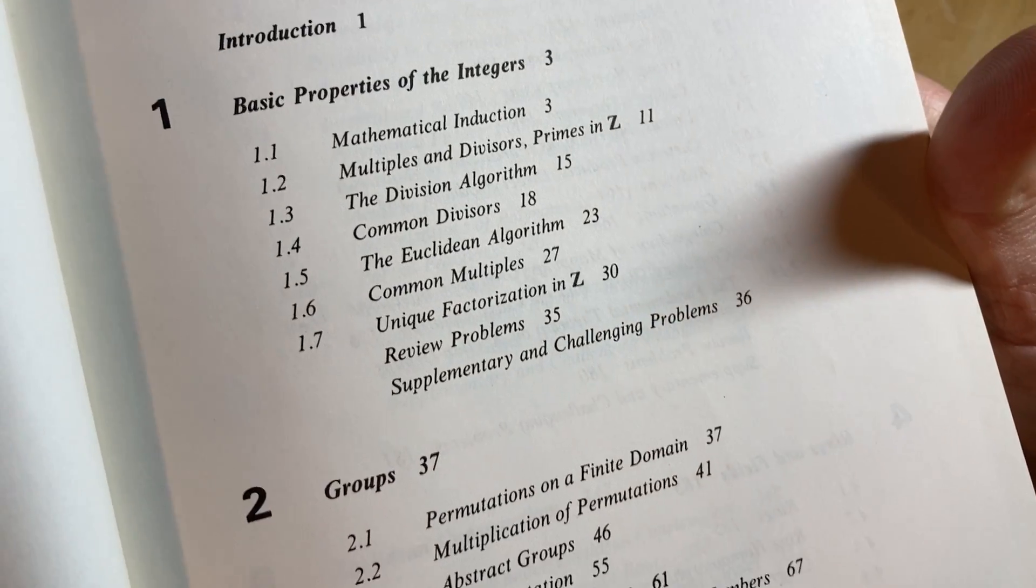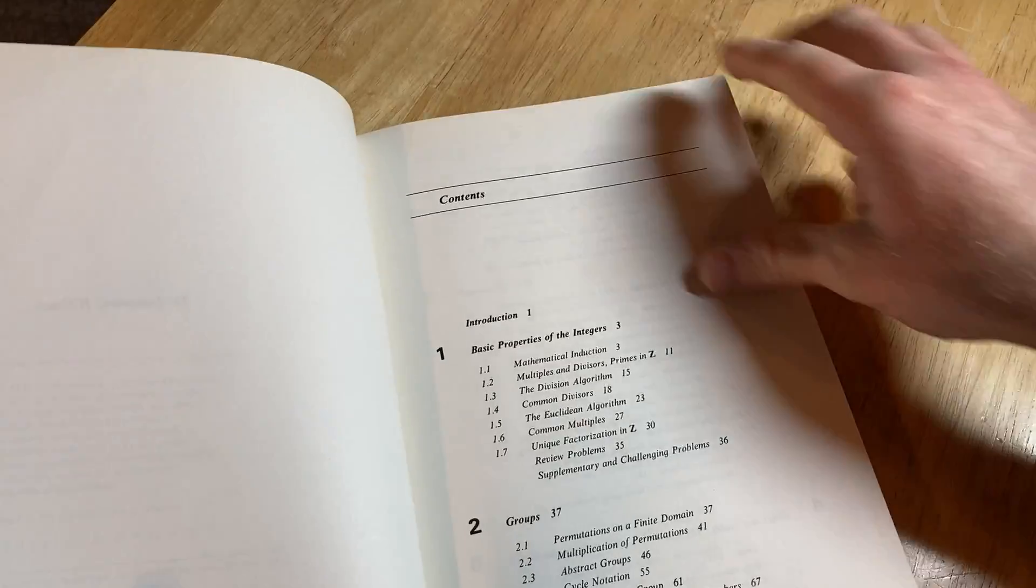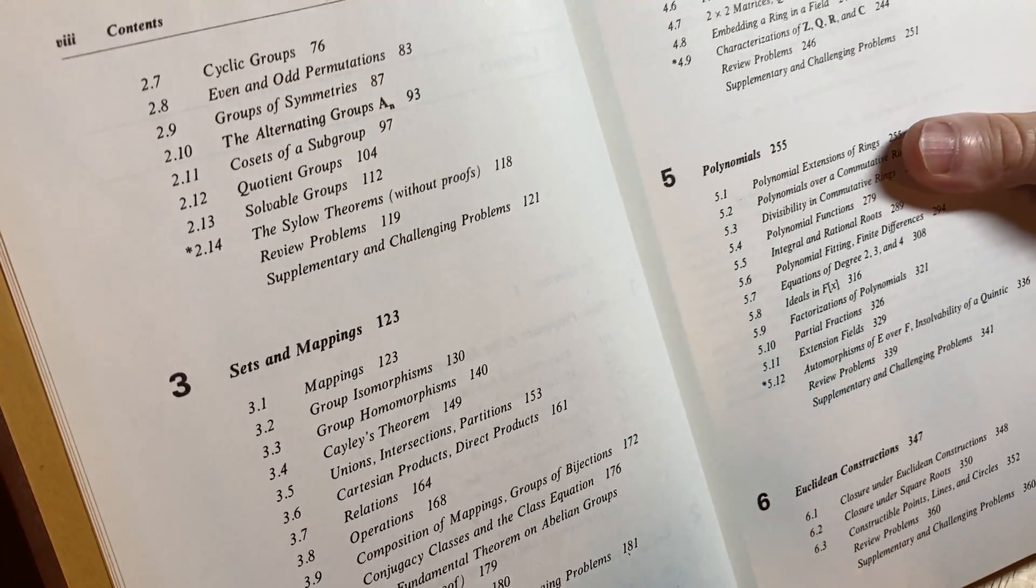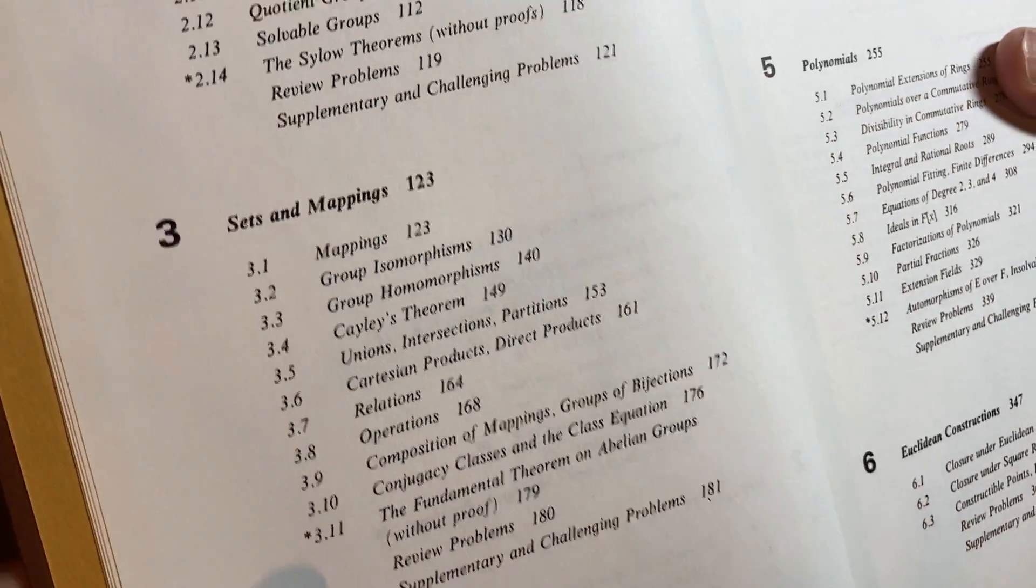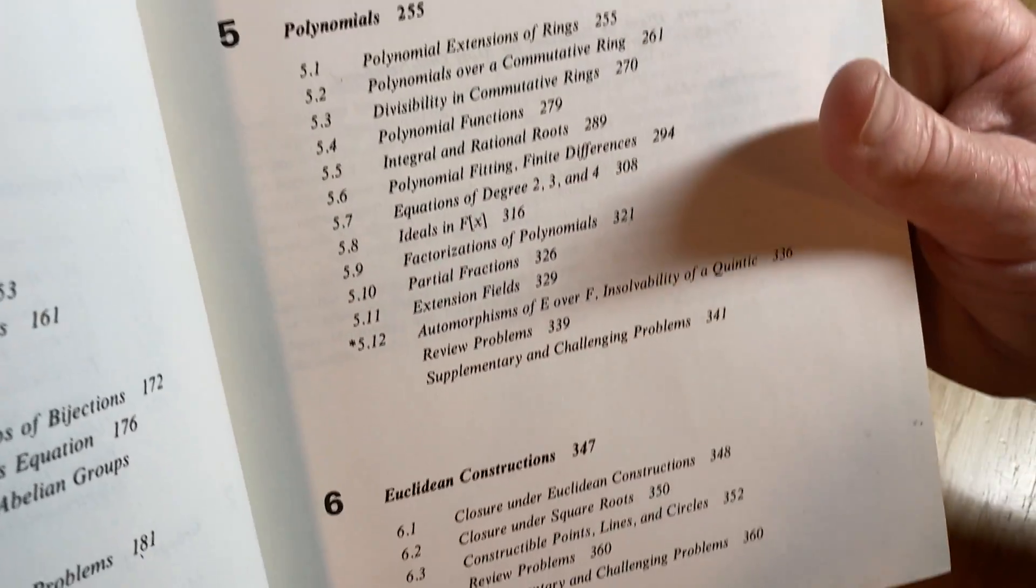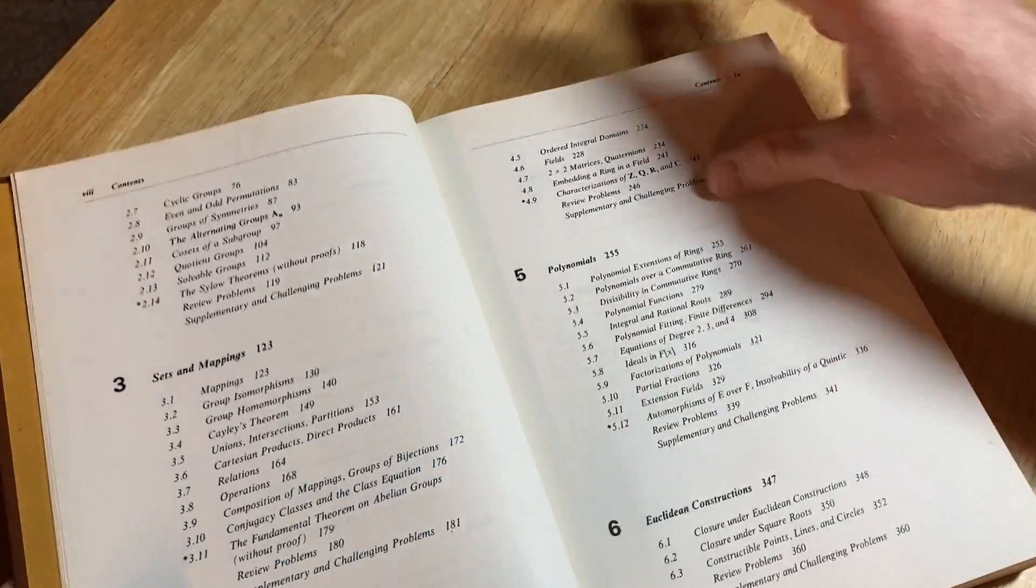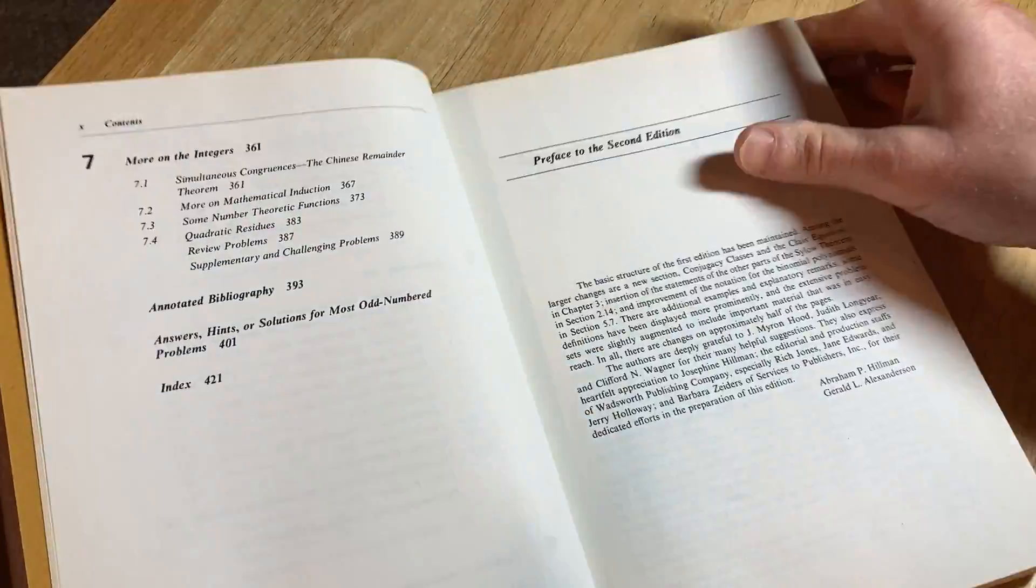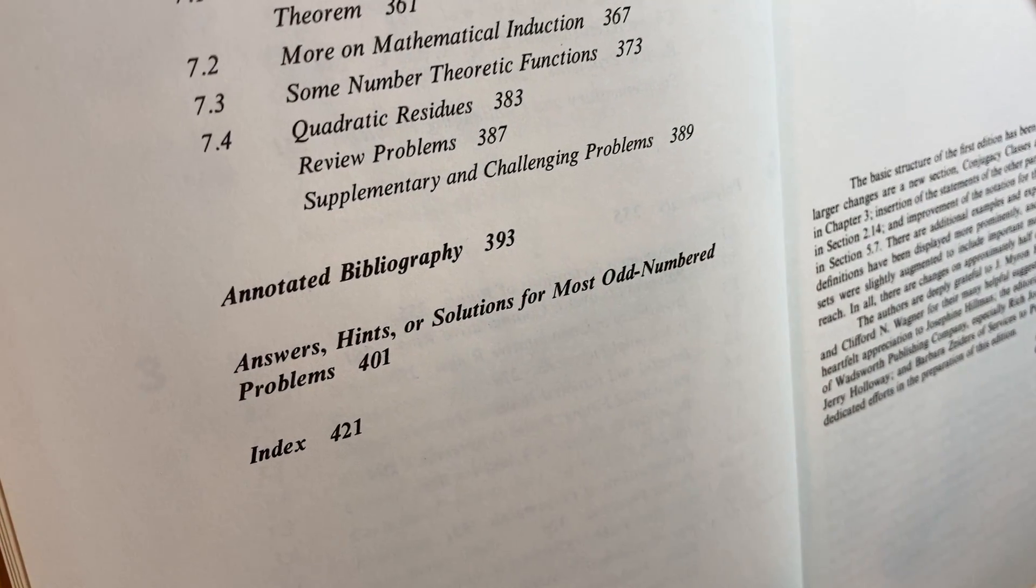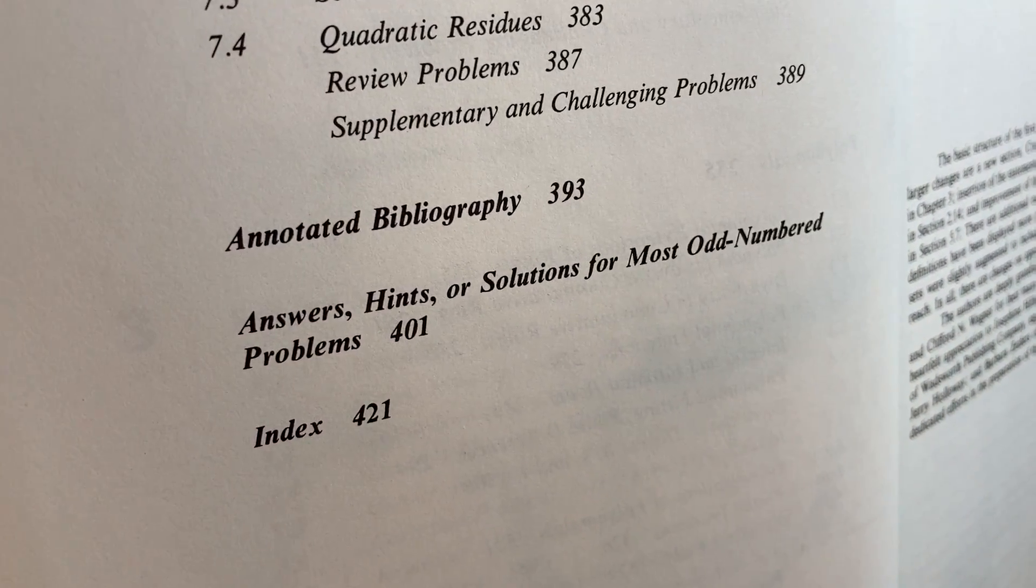It starts with the integers, goes on to groups. You could learn abstract algebra using a book like this. Now, in order to learn abstract algebra, you do need to know how to prove things. So that would be the biggest thing I think that could keep you from using this book to learn is that you might have trouble with the proof structure. But once you get past that, it's pretty good.